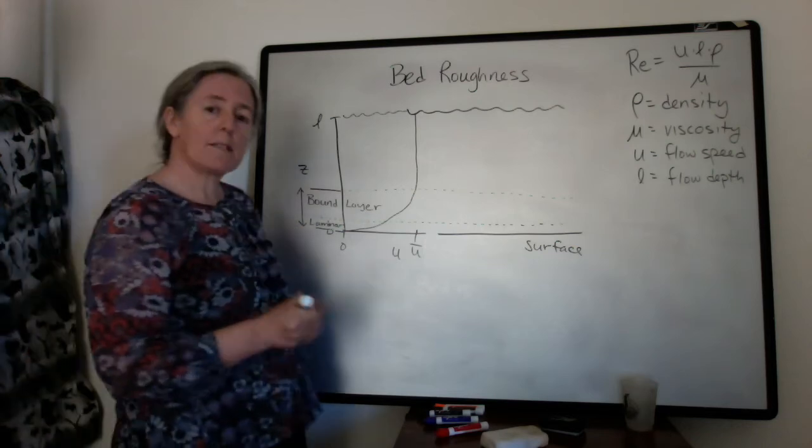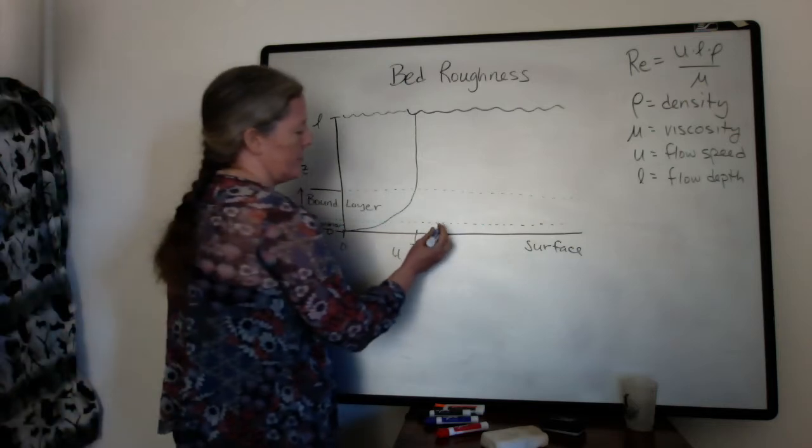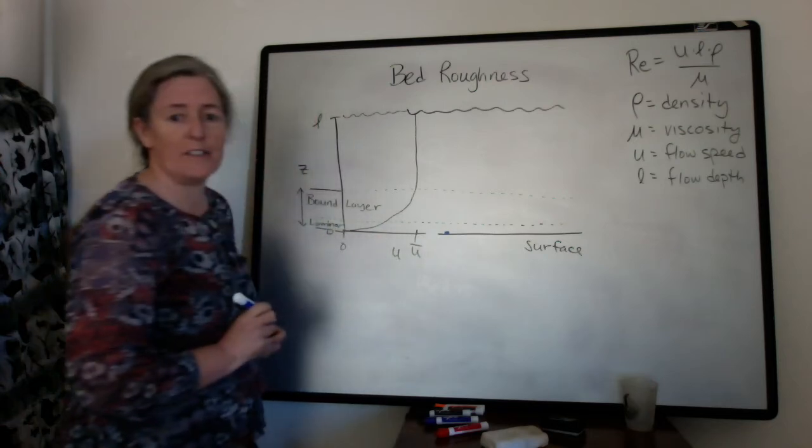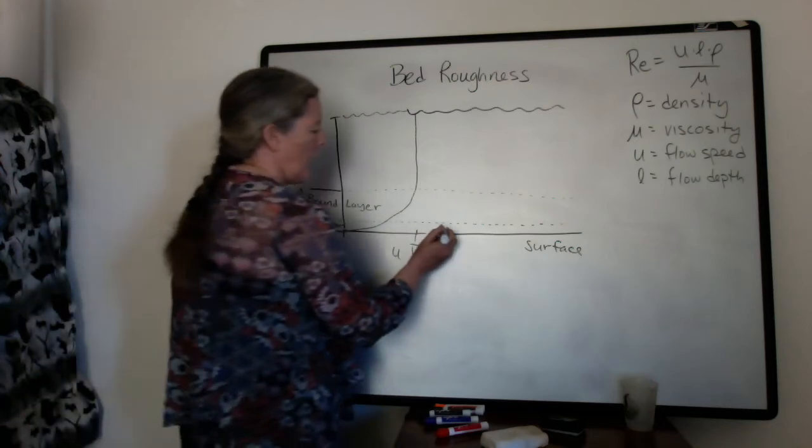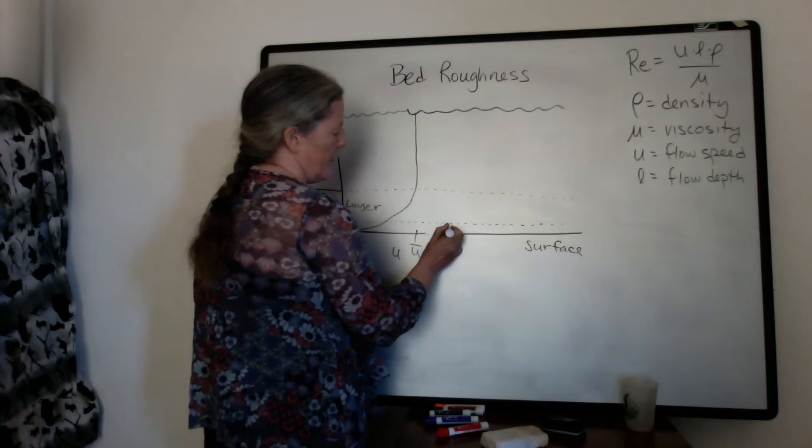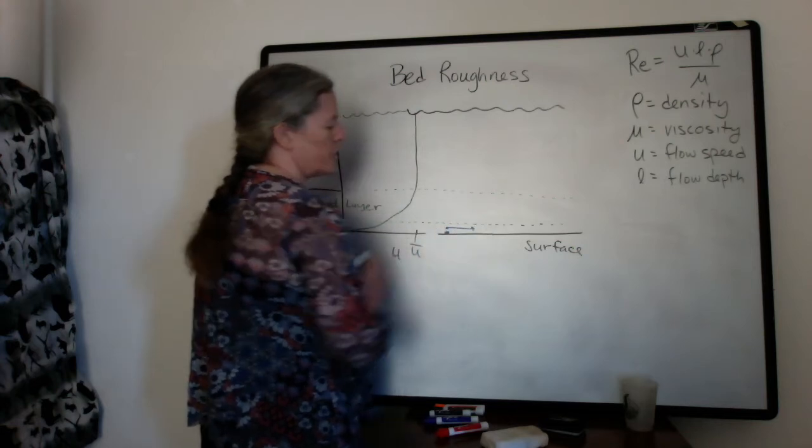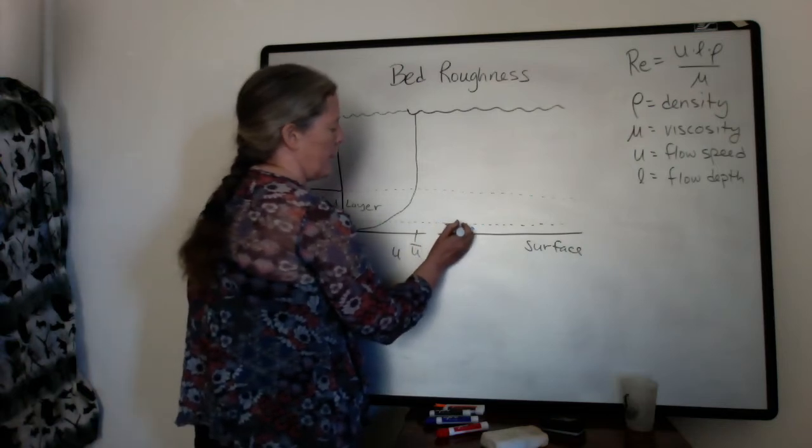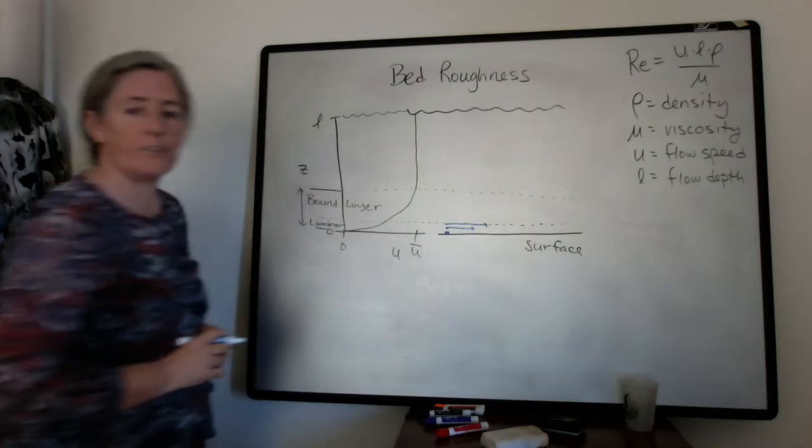So if we go back to thinking about the way particles behave in the laminar sub-layer right at the surface, the flow speed is zero, so our particles just sit there. If we're tracing water molecules, a little bit higher up, the molecules will just move in a straight line downstream and they'll be parallel to each other and there's no mixing.